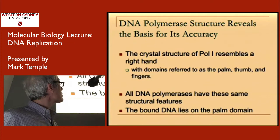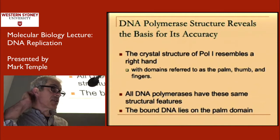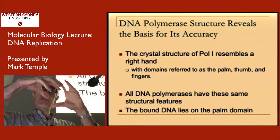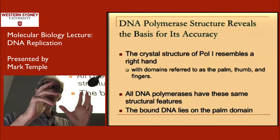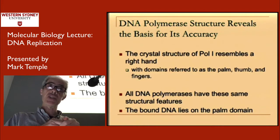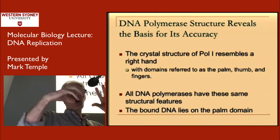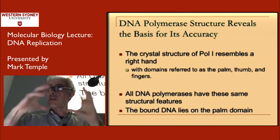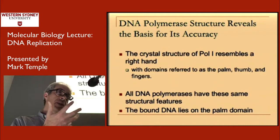When people started looking at these polymerases they were trying to understand mechanistically how they work — how can a protein replicate a bit of DNA? We tend to think about cells and these complex enzyme machineries as molecular machines — big enzymes with hinges that open and close, catalytic activities which grab things and add them. You can really start to appreciate that when you look at the 3D structures of these molecules. DNA polymerase structural studies reveal the basis for its accuracy.